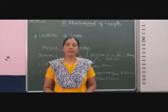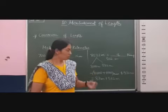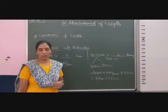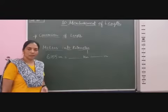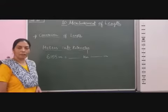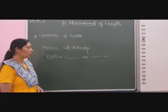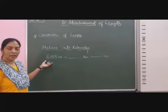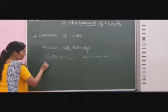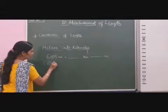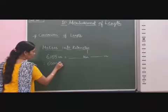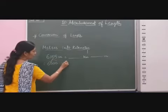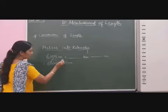Students, whenever in the question we need to convert meters into kilometers, we divide by 1000. Now the next question is: 6155 meters is equal to blank kilometers and blank meters. We separate the thousands from the hundreds, tens, and ones, giving us 6000 and 155 meters.